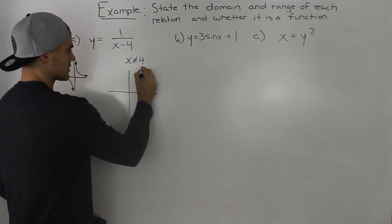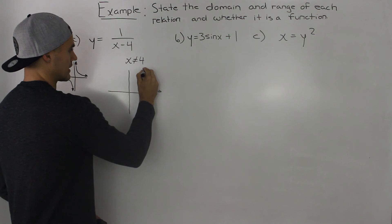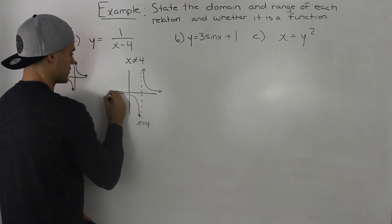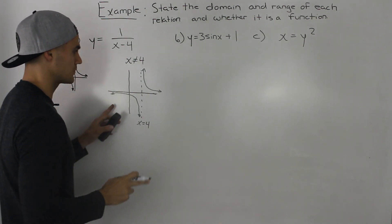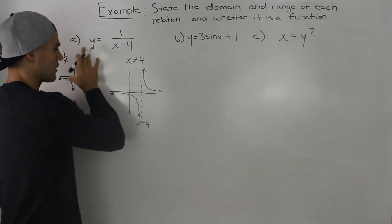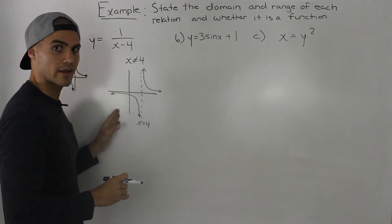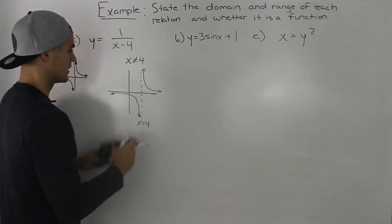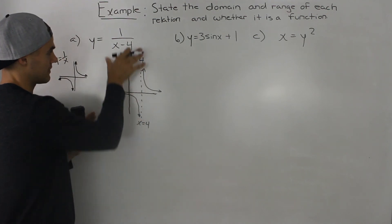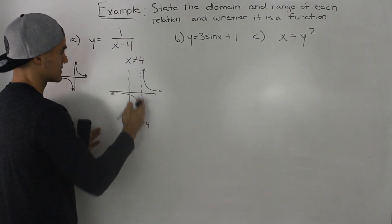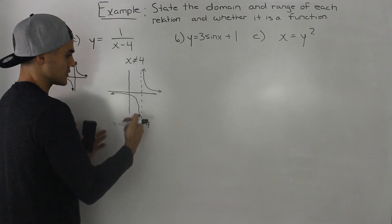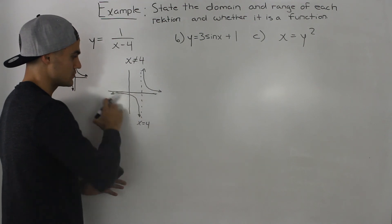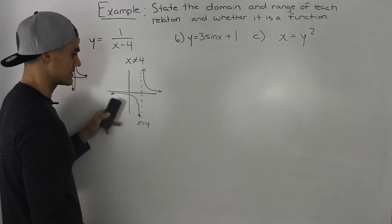This graph would look something like this. I'm not going to get into too much detail about how to graph it. You could review the grade 11 videos on transforming the parent function 1/x — we'll also have a full chapter dedicated to reciprocal functions in this course. The graph has a vertical asymptote at x = 4, and you can make a table of values for values greater than and less than 4 to see the shape.